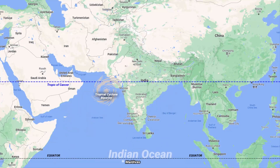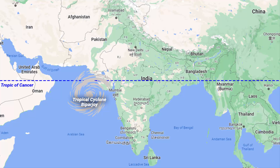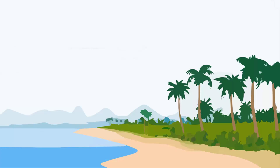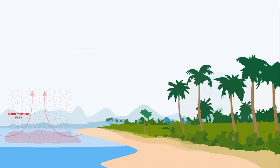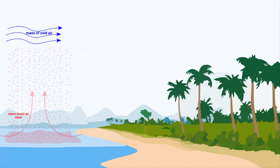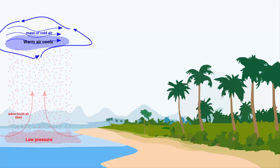Cyclone Biporjoy is a tropical cyclone and not a seasonal wind. A cyclone is a rotating storm that forms over warm tropical waters — in this case, the Arabian Sea. Even in a cyclone, the wind moves from ocean to land, but the mechanism is different. The ocean water is warmer than the land, and because of that, the moist air over the ocean rises, carrying water vapor. As the air rises, it cools, because temperature and air pressure decrease with altitude, and the water vapor condenses, releasing latent heat. This latent heat warms the rising air, causing it to rise even higher, creating a low pressure area at the surface of the ocean.